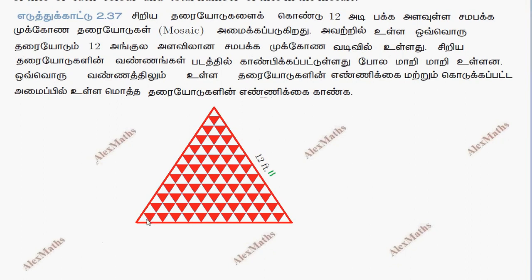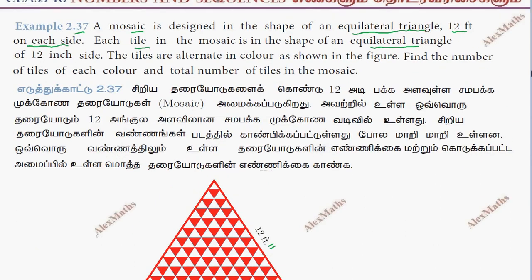Every tile is the shape of an equilateral triangle. We have two colors — red and white. The tiles are all in red or white color. Find the number of tiles of each color, that is, the total number of tiles in the mosaic.